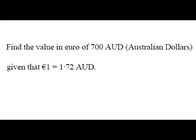Find the value in euro of 700 Australian dollars, given that one euro is equal to 1.72 Australian dollars. In currency questions, there's always a one — here the one is in euro, but we want to change 700 Australian dollars. The currencies are different, so we divide.